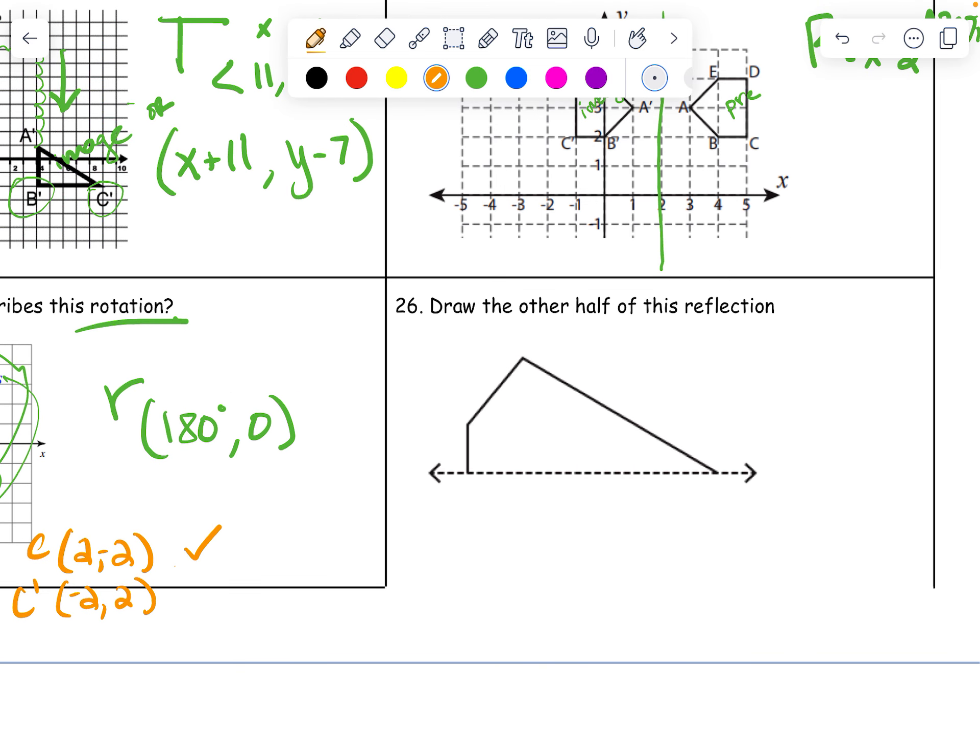Draw the other half of this reflection. Let's see. It needs to be a mirror. It needs to be able to kind of fold in half. It doesn't have to be perfect, y'all. We know we can't draw exactly. But we're going to try our hardest to kind of get it right. There it is. Cool. Hope that helps.